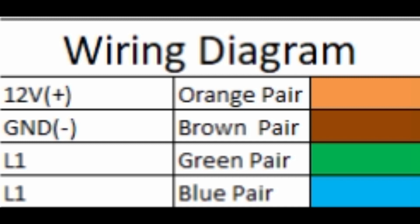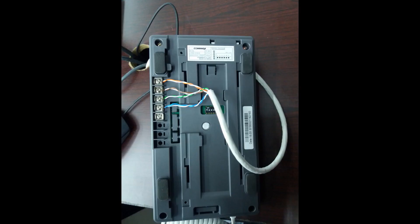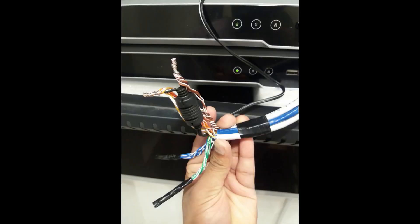The same way, all 6 brown pairs we will take and join together and connect with the negative terminal or ground terminal of the power supply. That means a normal adapter like 12 volt 5 amps or 12 volt 3 amps we can use as adapter. From each device we will take one pair for L1 and one pair for L1, and we will join together and make it proper insulation.